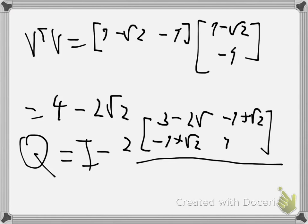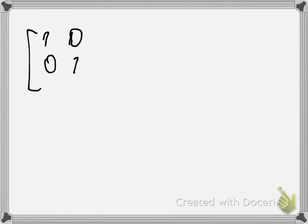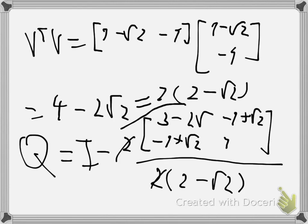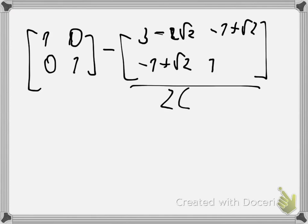We can factor V-transpose V as 2 times (2 - √2), so the factor of 2 in the numerator and denominator cancel. We then rewrite the expression with a common denominator of (2 - √2), multiplying the identity matrix entries accordingly to get the same denominator throughout.